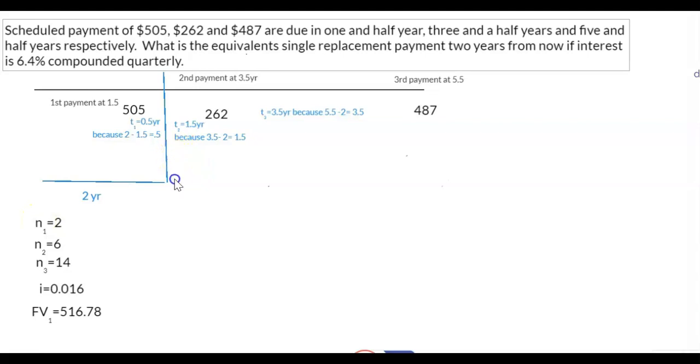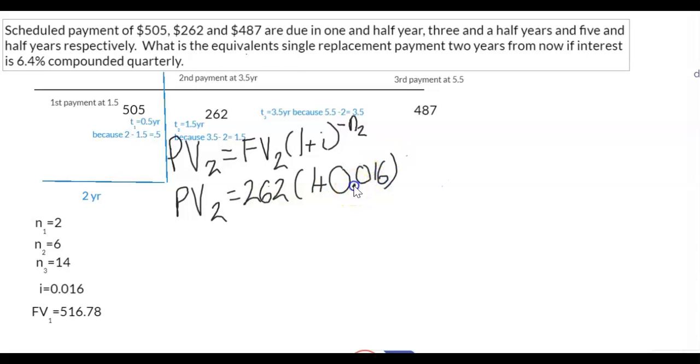So the equation for PV2 is: PV2 is equal to FV2 times 1 plus periodic interest to the power of negative n. Because we're going back in time, that's why it's negative. Note that this number is occurring in the future, so it's actually considered a future value. So PV2 is equal to 262 times 1 plus 0.016. You've already found this number. It is 6.4 divided by 4. Your negative N2 is negative 6.